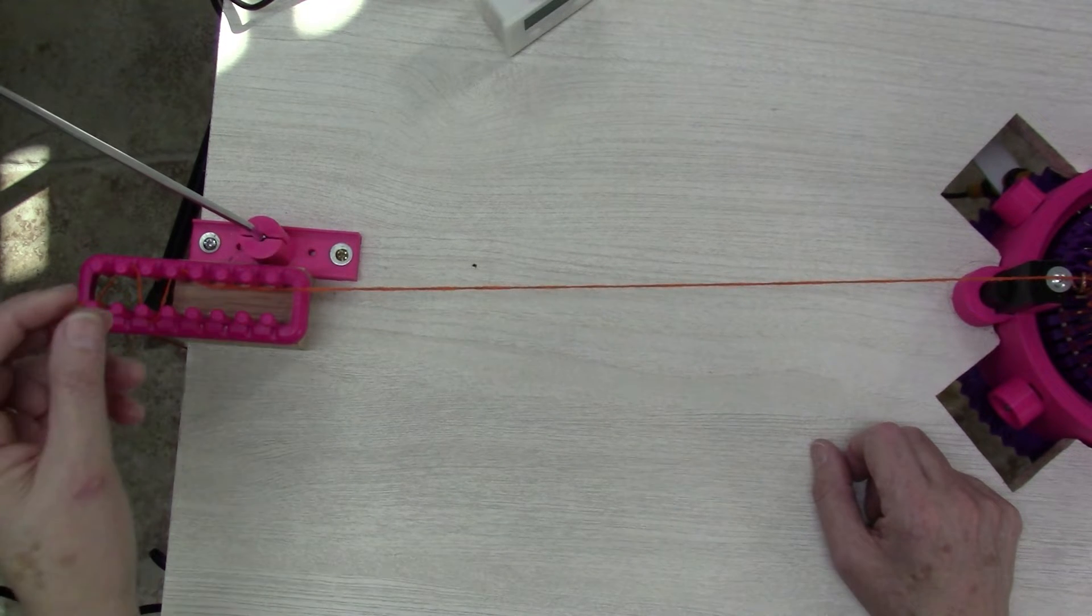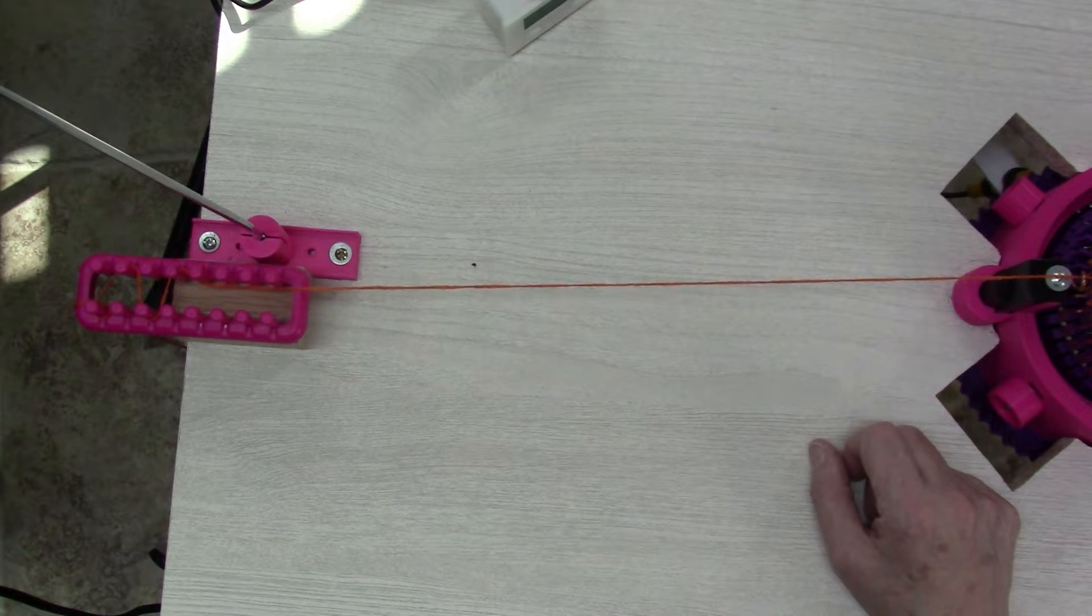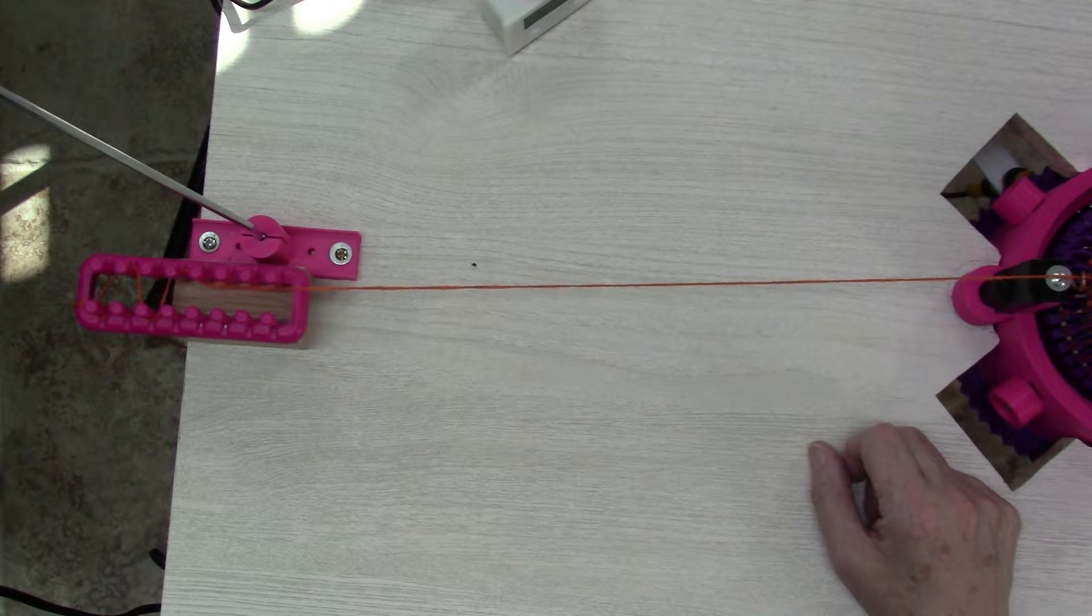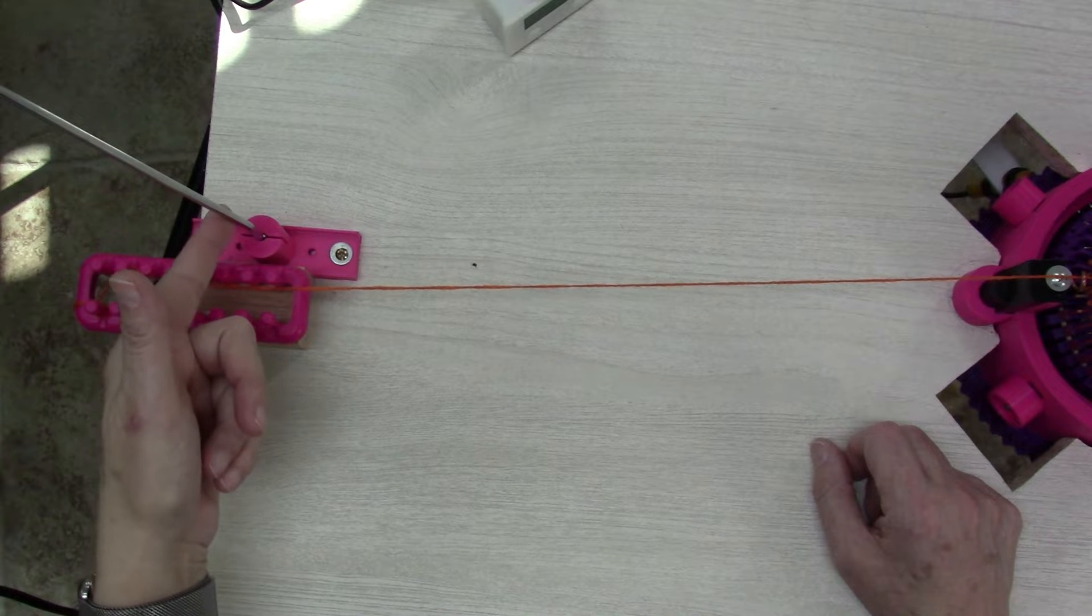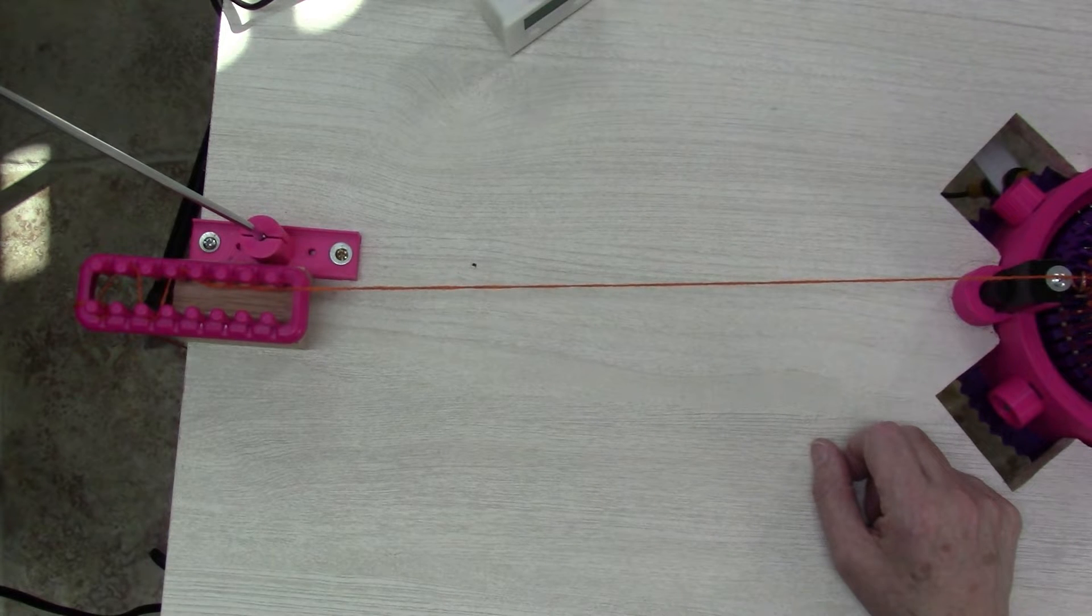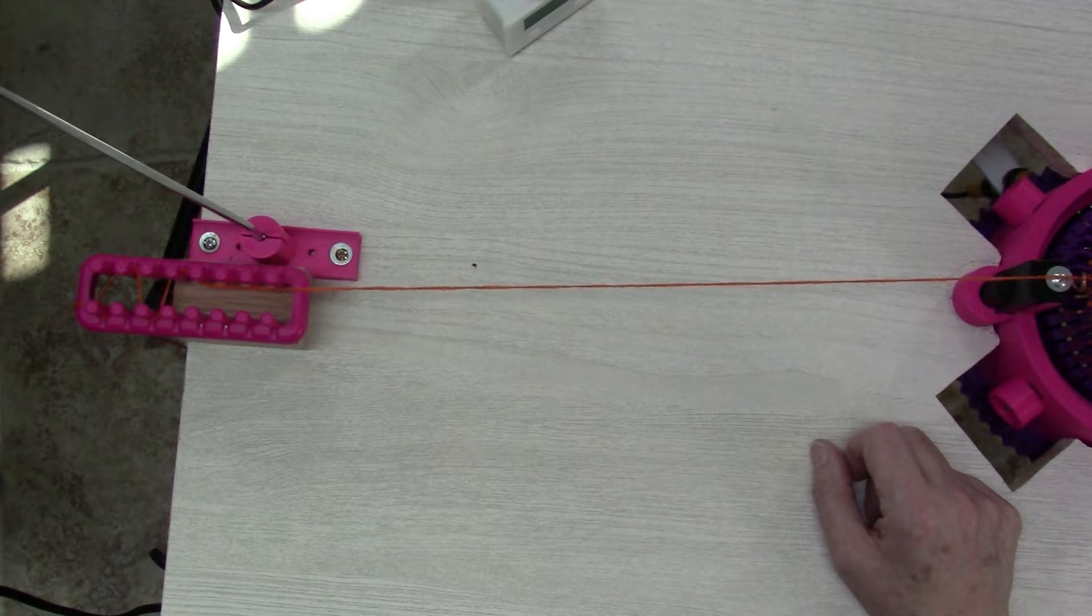the thing that I'm fixing to show you is going to help you to tension your yarn and keep it at a consistent tension. These you can buy on eBay for about $35 plus shipping, so they're not that expensive.